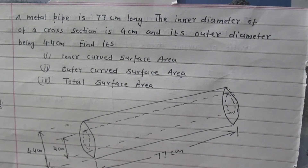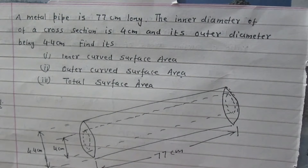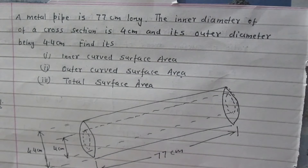A metal pipe is 77 cm long. The inner diameter of a cross section is 4 cm and its outer diameter is 4.4 cm. Find its inner curved surface area, outer curved surface area, and total surface area.